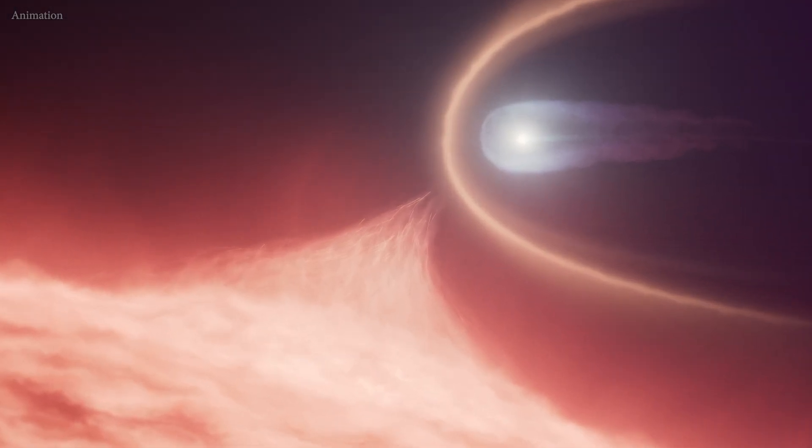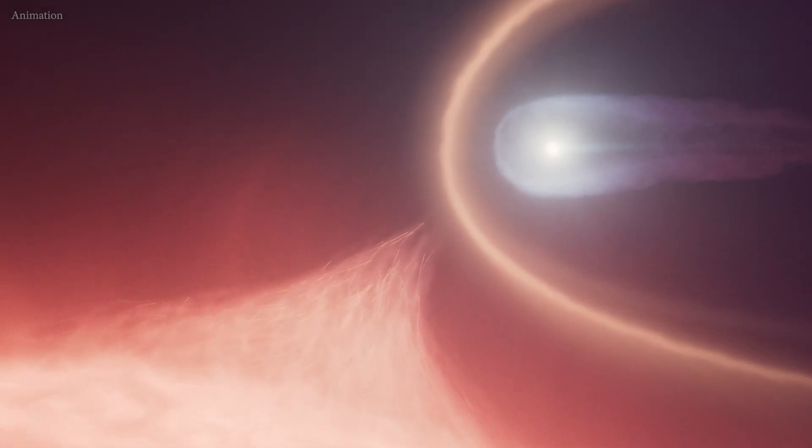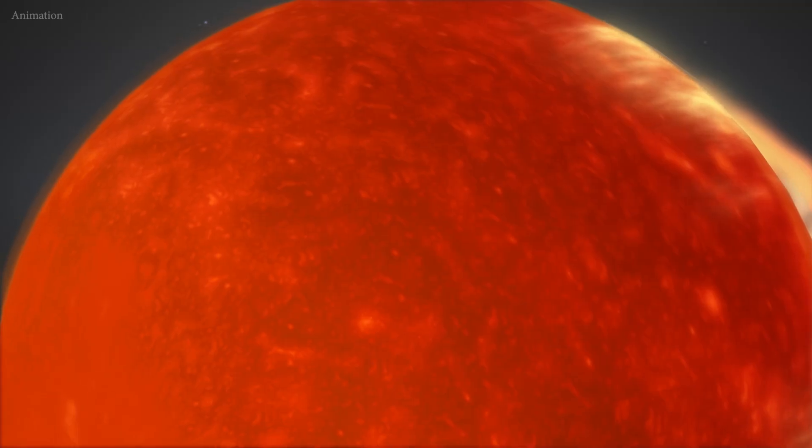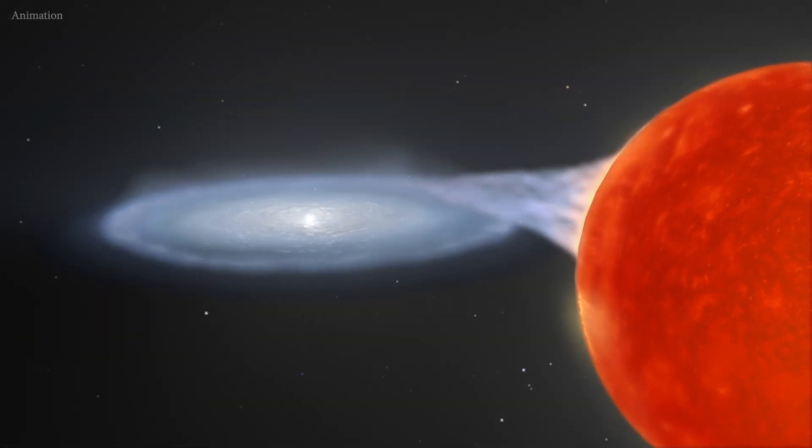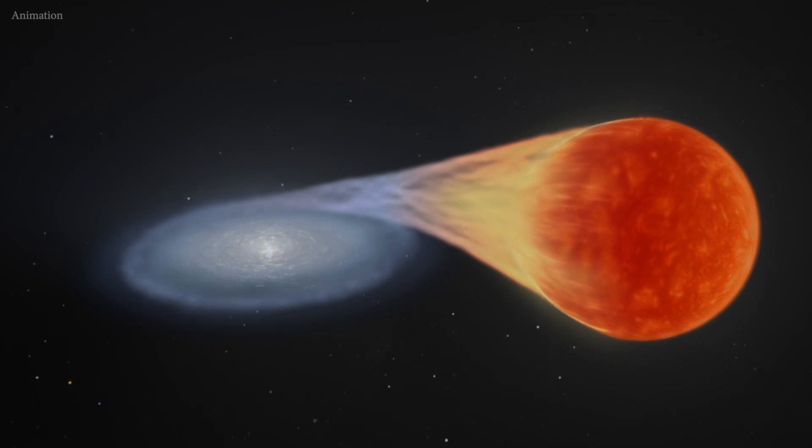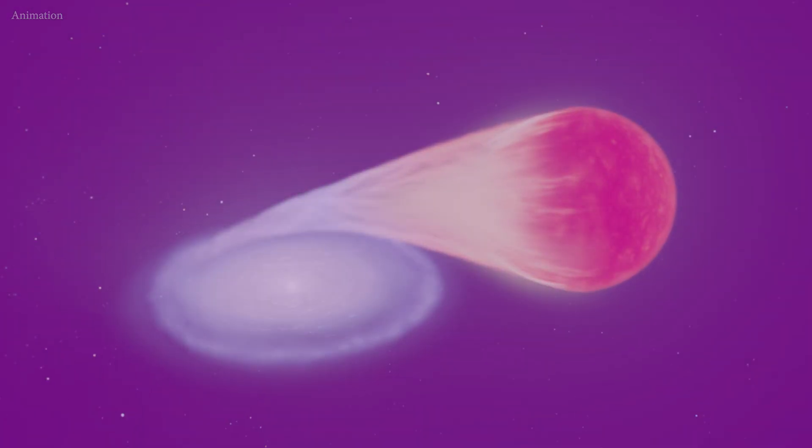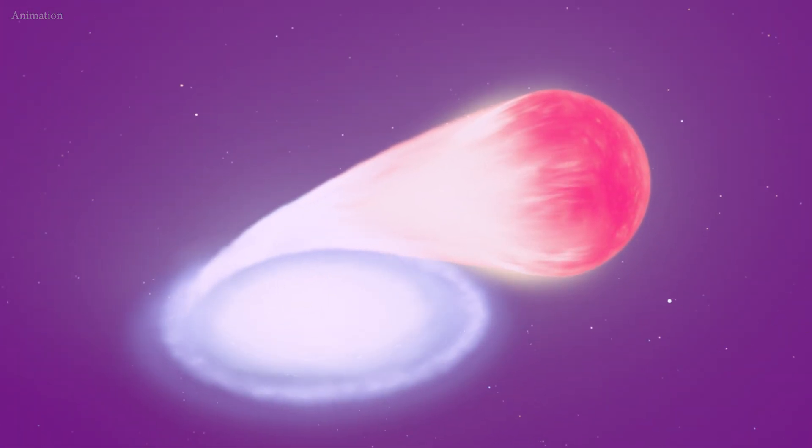This white dwarf's merger origin would be impossible to identify without Hubble's ultraviolet sensitivity. In hotter white dwarfs, spectral lines from elements heavier than helium fade in visible light and stay bright in ultraviolet, where Hubble can detect them.